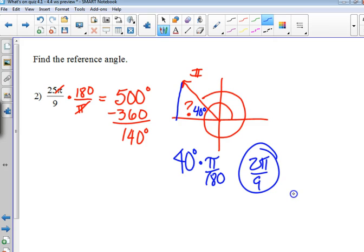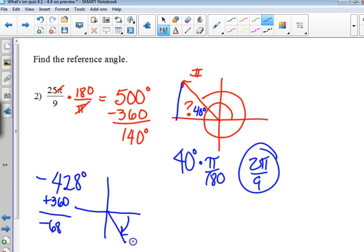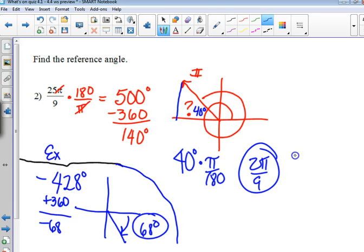Reference angles are always positive, by the way. We've got to change it back to radians. So we've got to do times pi over 180, which is 2 ninths. The answer to number 2 was 2 pi over 9. Did we do one yesterday like that on worksheet 27?